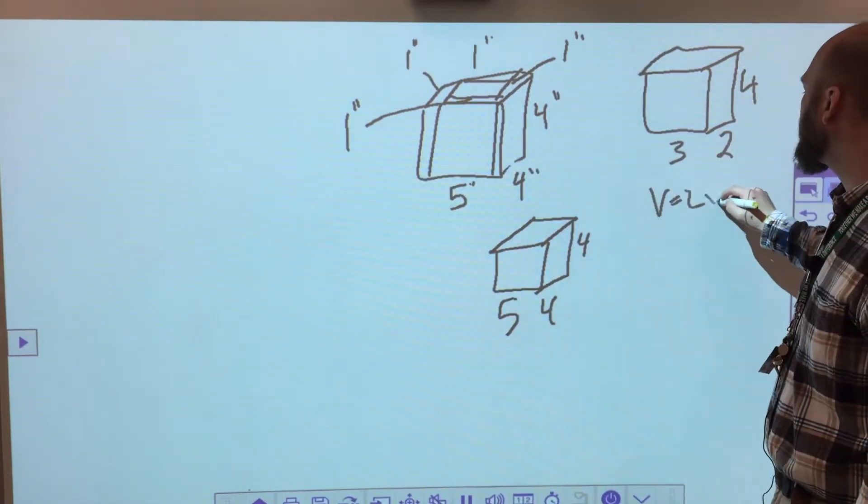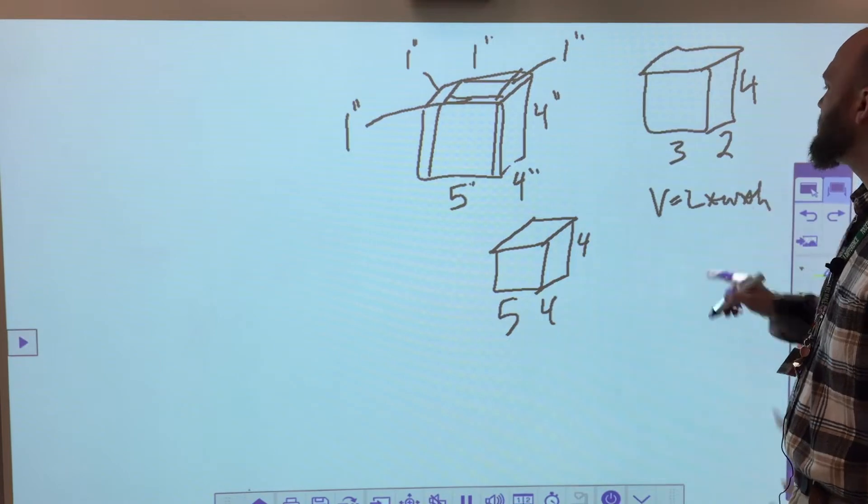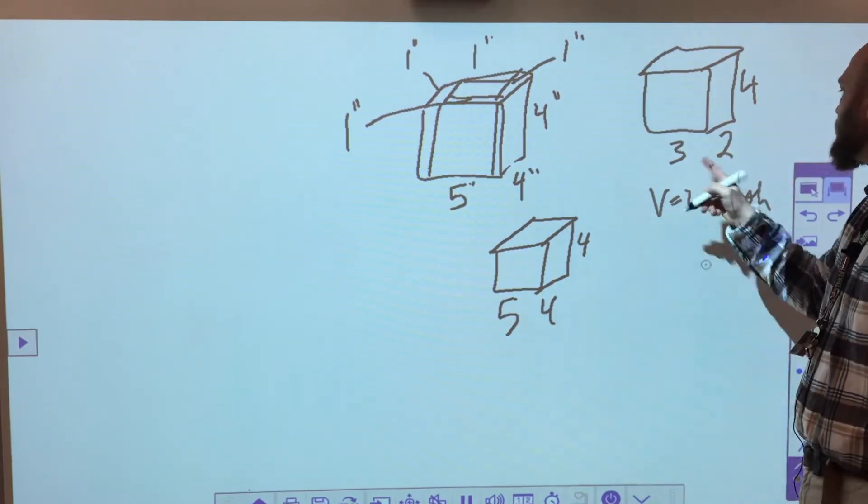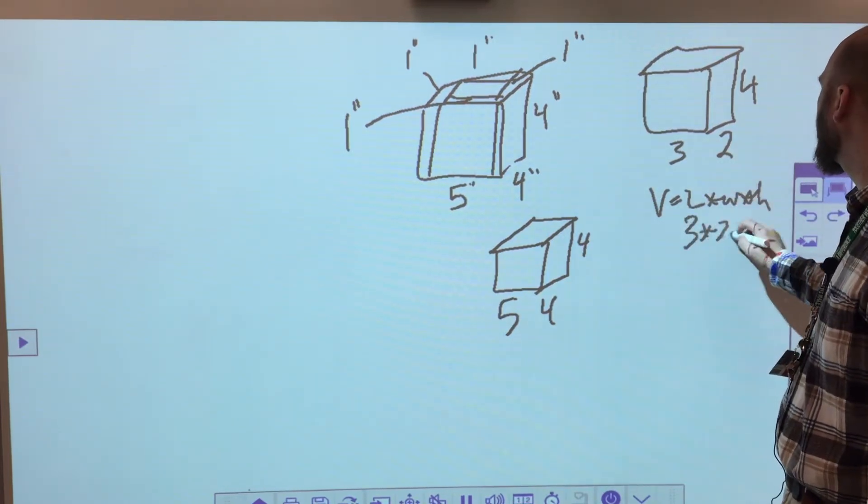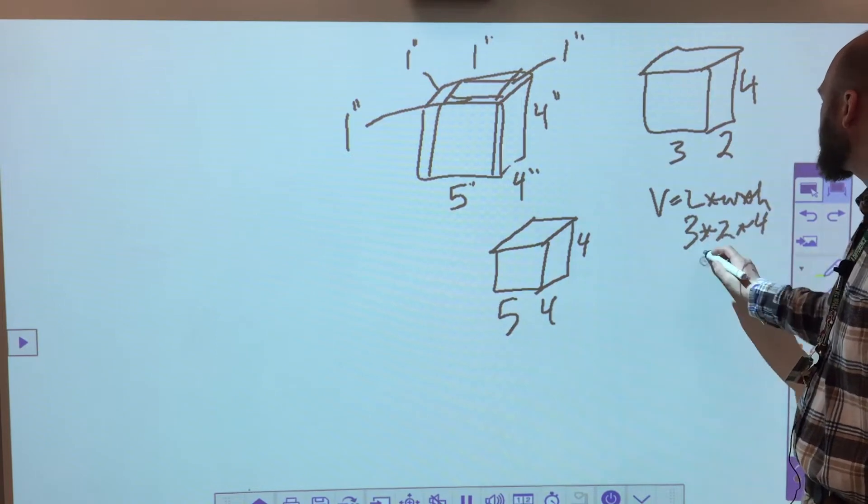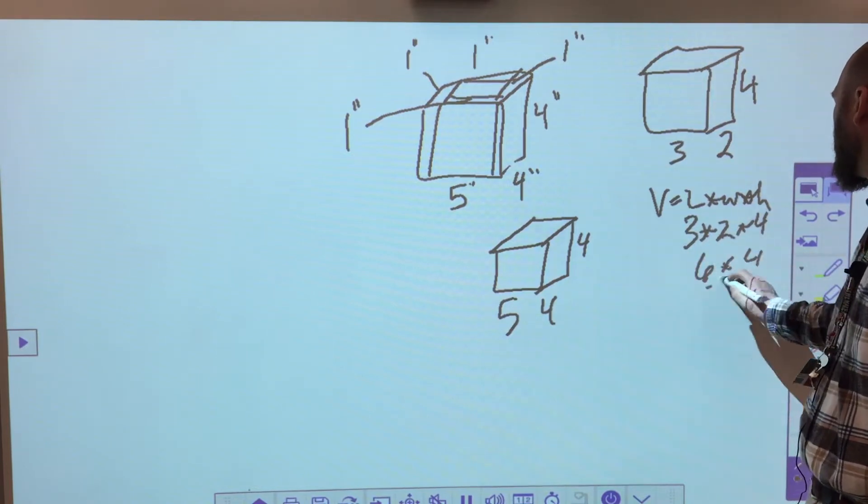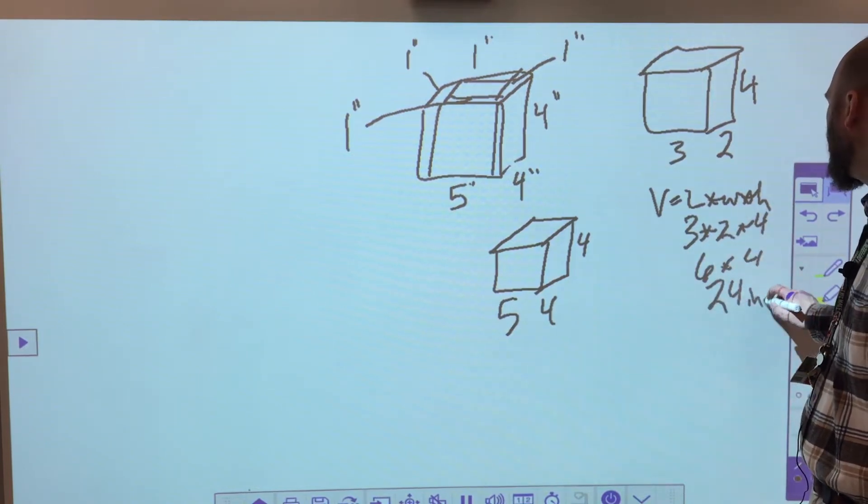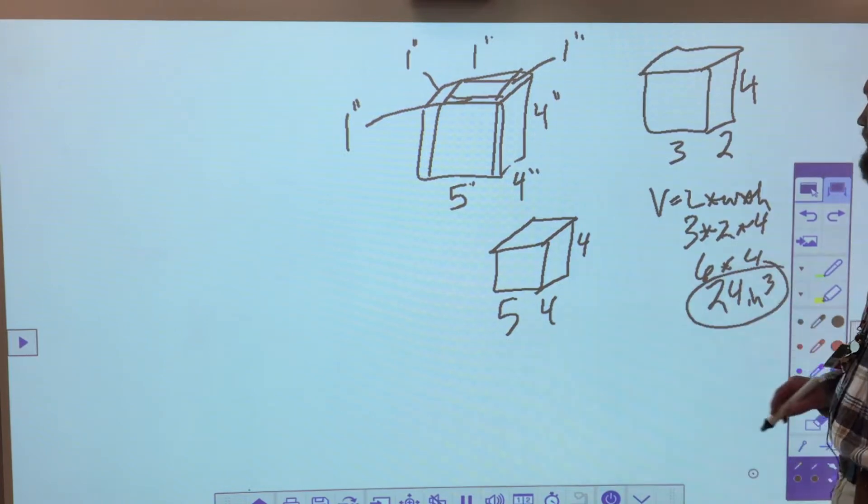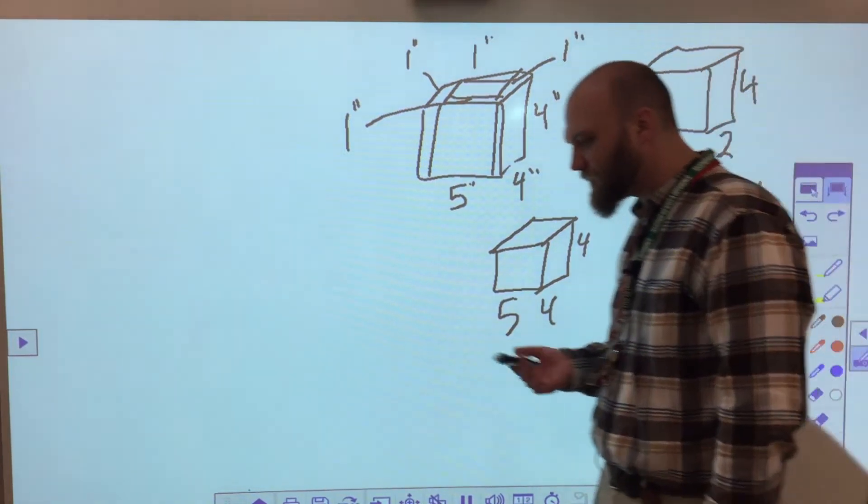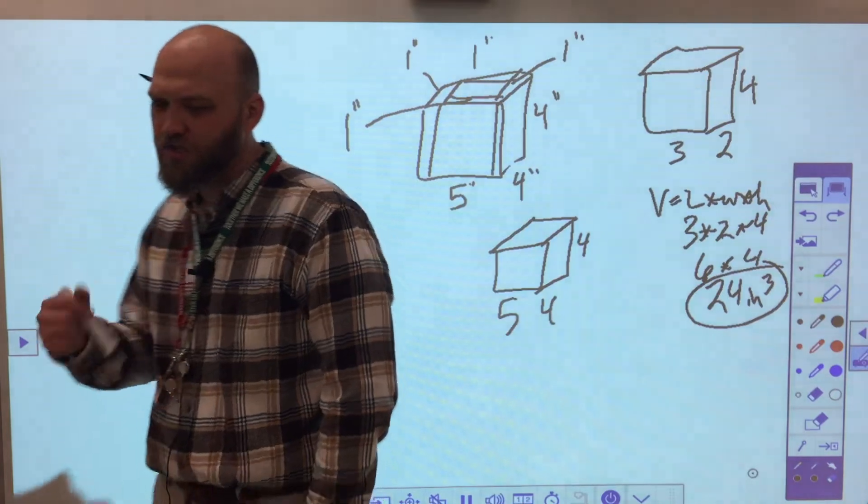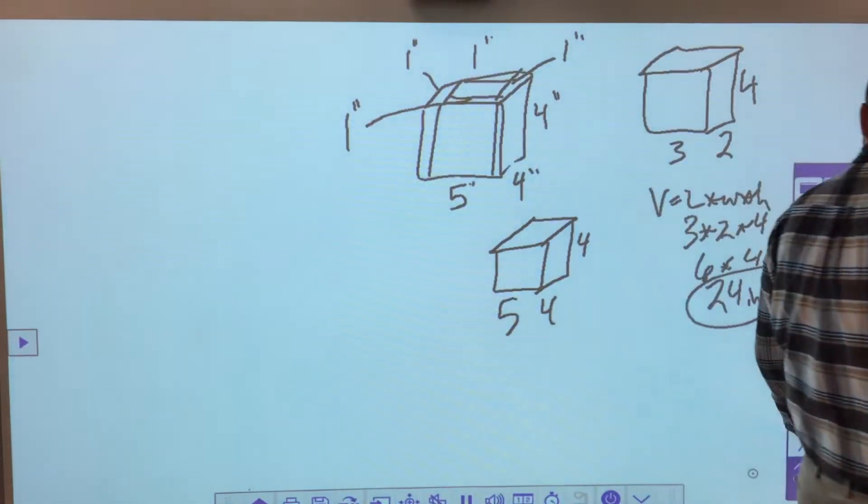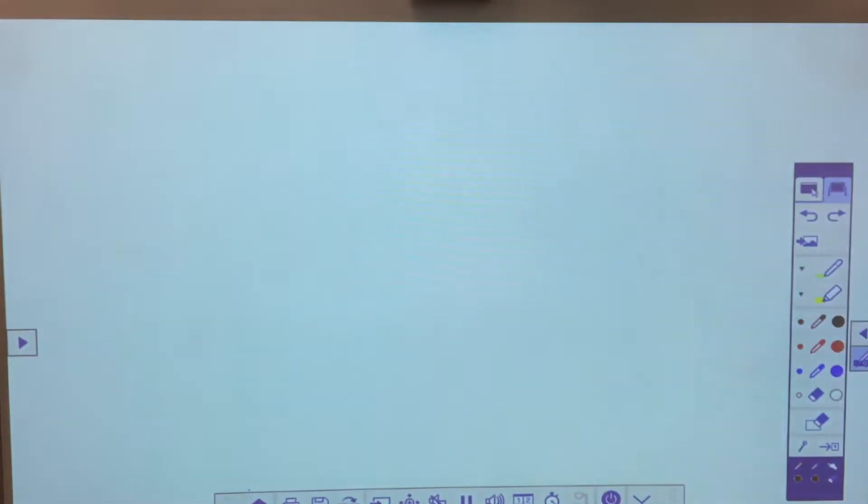So volume equals length times width times height. I have my frame of reference right here. 3 times 2 times 4. 3 times 2 is 6. 6 times 4 is 24 inches cubed. So it's not anything more difficult than what we've already done. We're just using what we already know to apply it in this scenario. So you really have to read carefully and make sure that you understand what it's asking you to do.